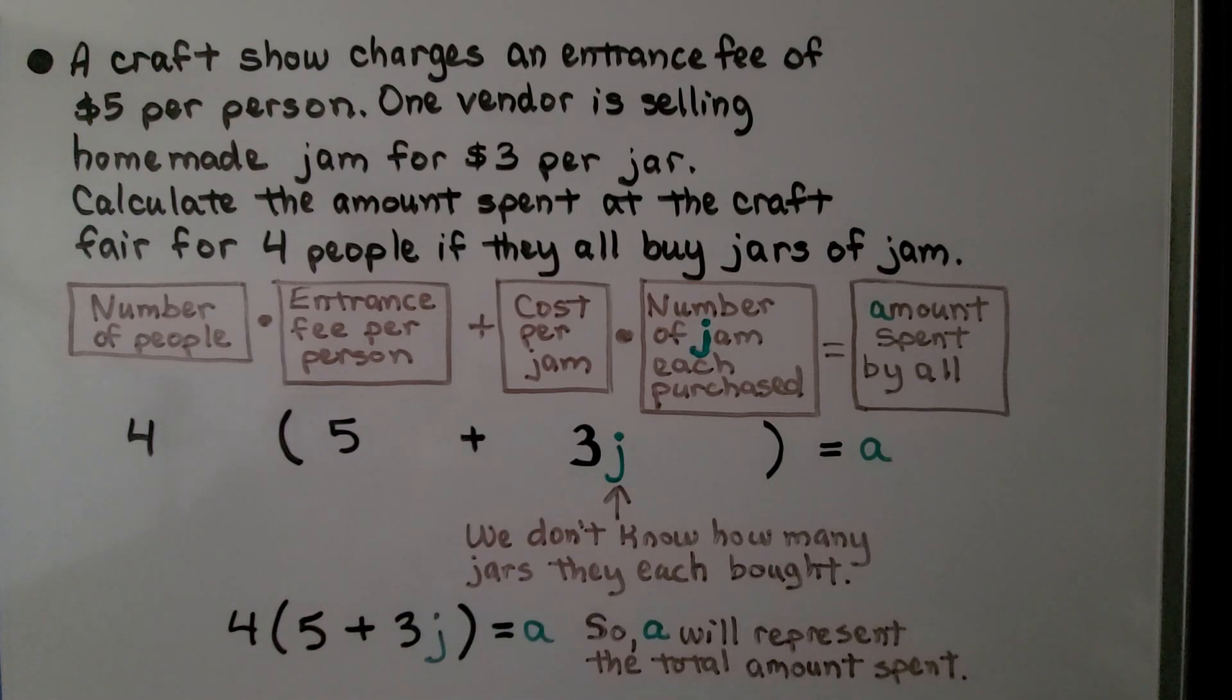And that's going to equal the amount spent by all. And because we don't know how many jars they each bought, we just have a J here, so our equation is going to be 4 times 5 plus 3J, and that will equal A. So A will represent the total amount spent.